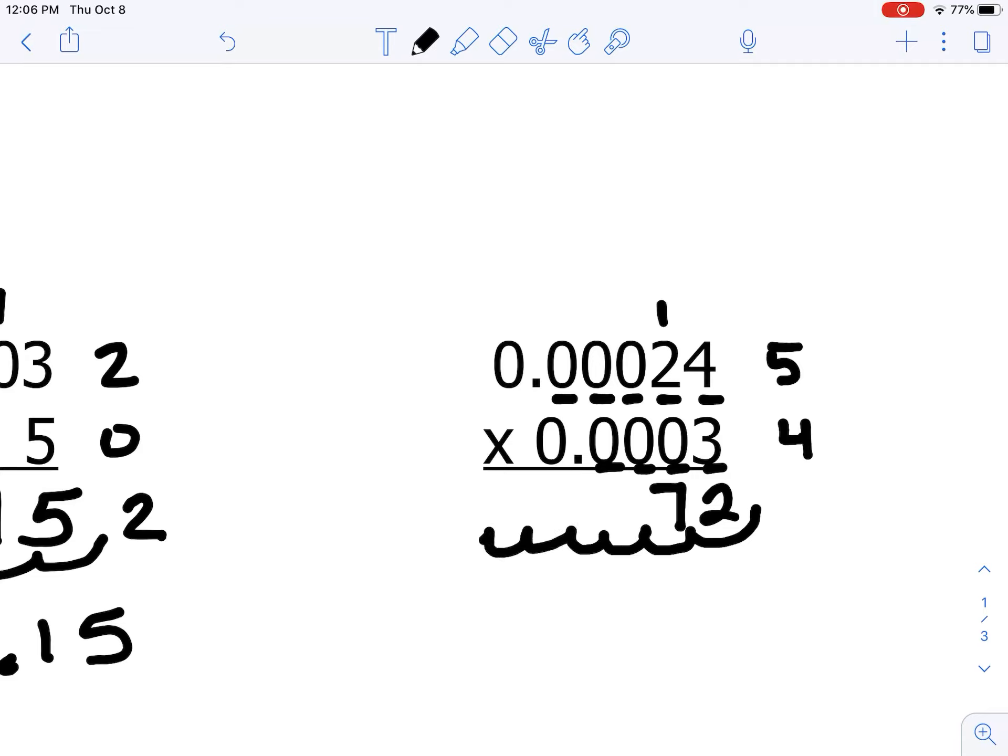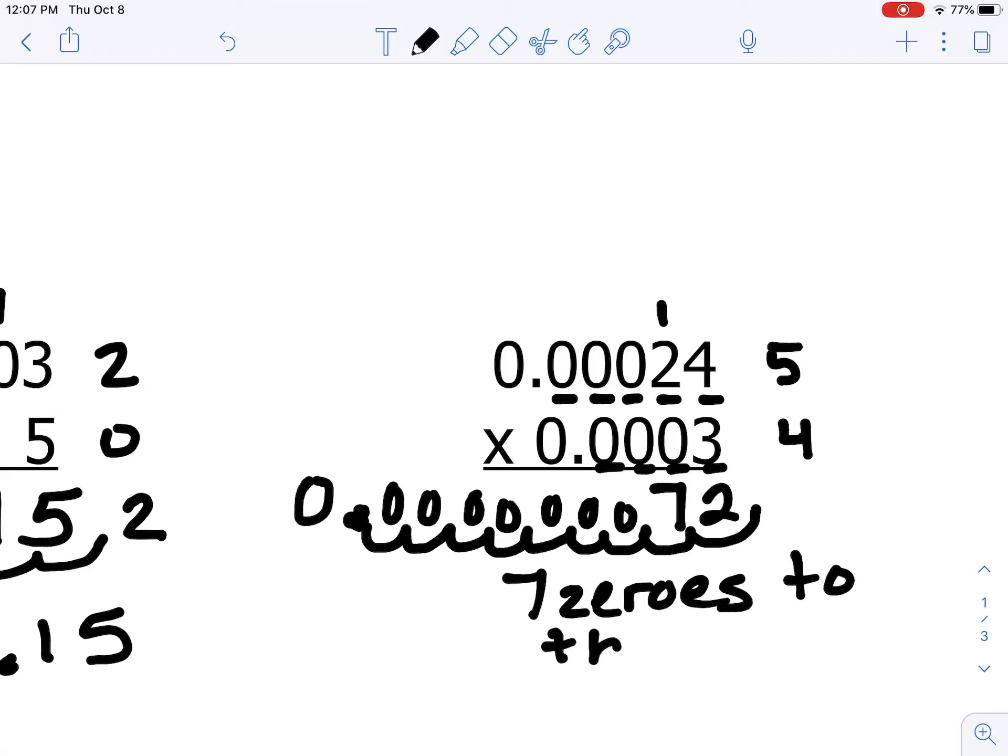So from the right side, I'm going to bump it over 3, 4, 5, 6, 7, 8, 9. And we're going to fill all these spots with zeros. 1, 2, 3, 4, 5, 6, 7. So we need 7 zeros to the left of 72, and that doesn't include the zero in the ones place.